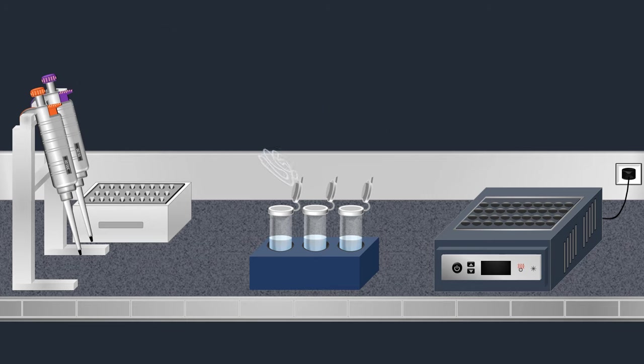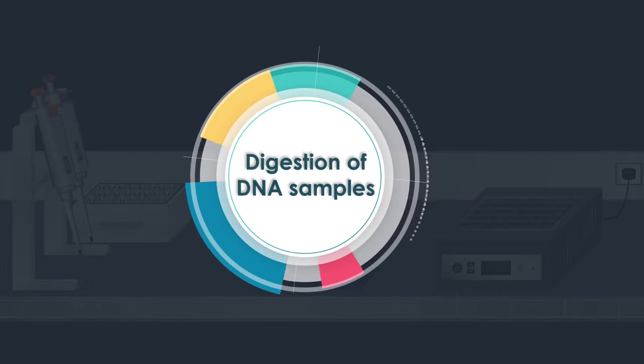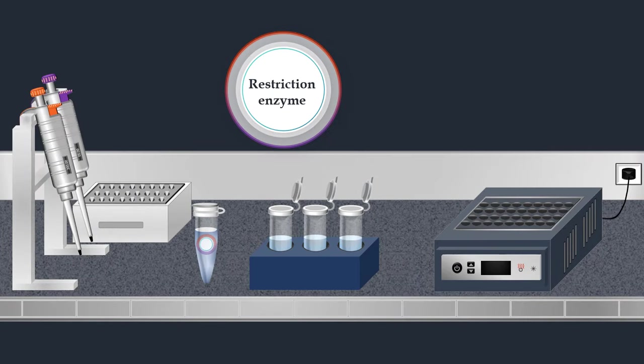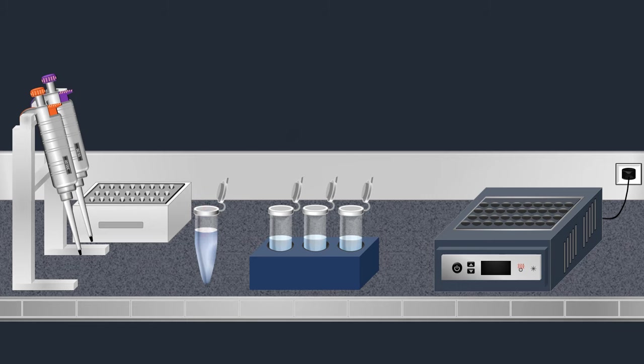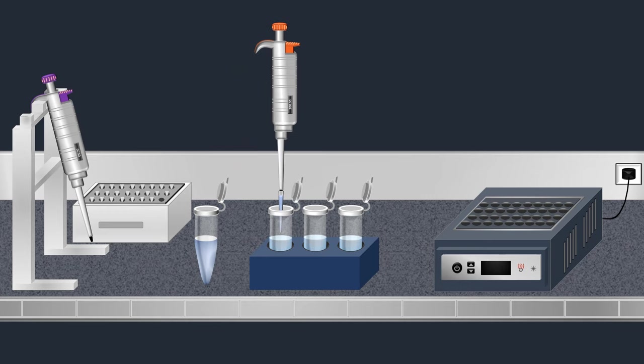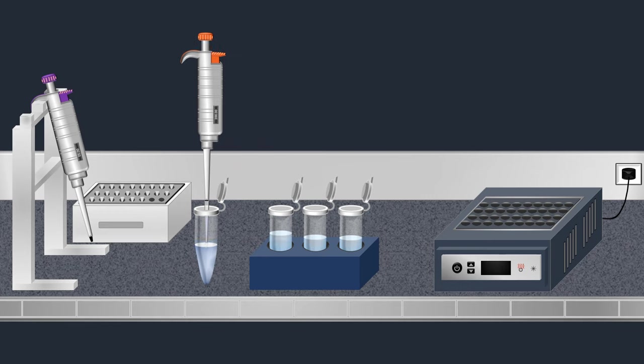The first step in southern blotting is the digestion of DNA samples with an appropriate restriction enzyme. A restriction enzyme, also called restriction endonuclease, is an enzyme that cleaves DNA into fragments at or near specific recognition sites within molecules known as restriction sites.